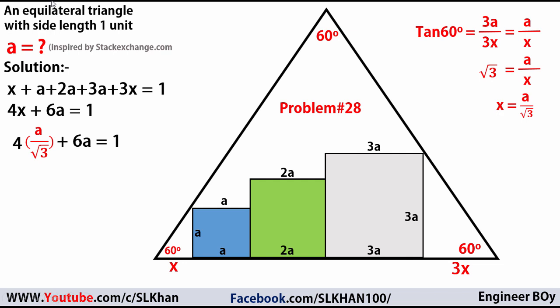If we simplify this a little more, this fraction can be converted into decimals: 2.309a + 6a = 1. Add these, which gives 8.309a = 1. We can divide both sides by 8.309, so we can get the value of a equals 0.12 and so on.